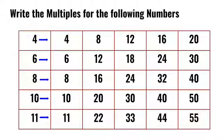Then, we have to write the multiples of 10. 10 ones are 10, 10 twos are 20. So 10, 20, 30, 40, and 50 are the first 5 multiples of 10.